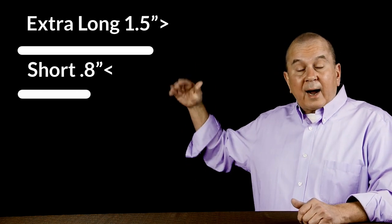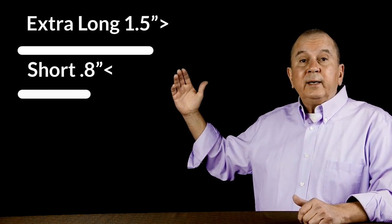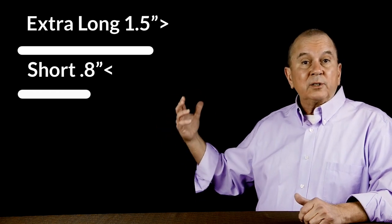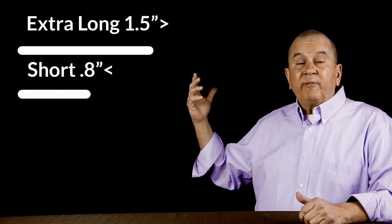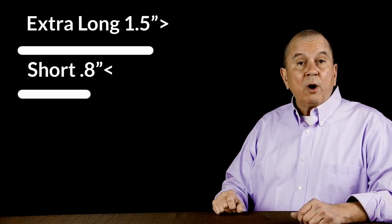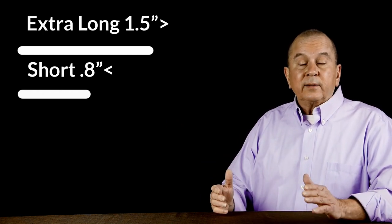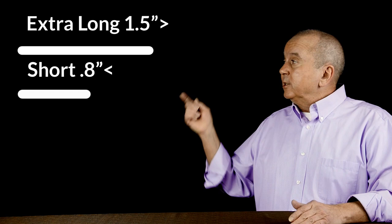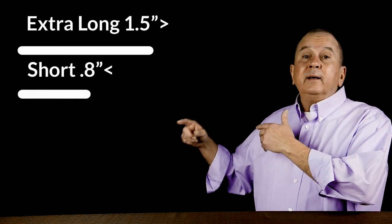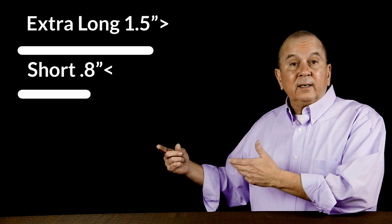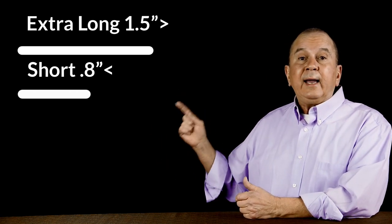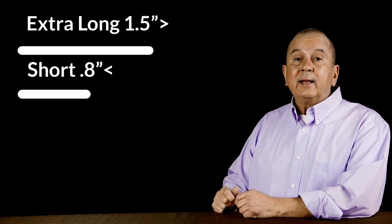On the high end of the spectrum is extra long staple cotton — this is the finest grade of cotton, with fibers 1.5 inches or longer. On the low end of the spectrum are short fibers, which you find in many Chinese and Indian-grown cottons, measuring 0.8 inches or less.